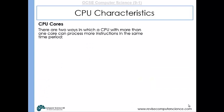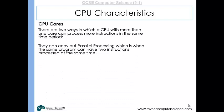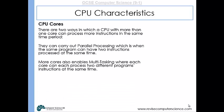A CPU with more than one core can process more instructions in the same time period in two ways. The first is parallel processing, where the same program can have two instructions processed at the same time. The second is multitasking, where each core processes instructions from different programs simultaneously. So parallel processing is one program having multiple instructions processed at once, whereas multitasking means several programs can have their instructions processed at the same time.